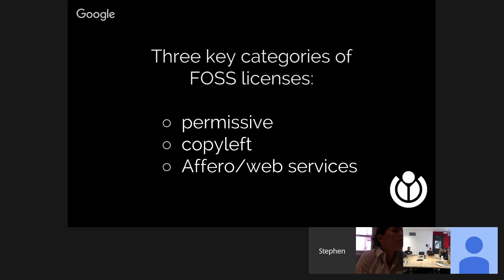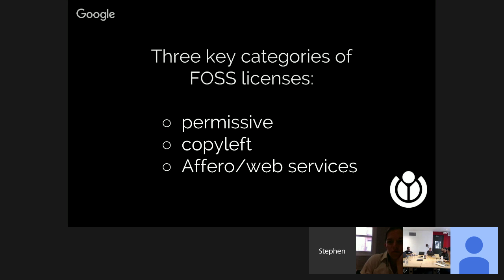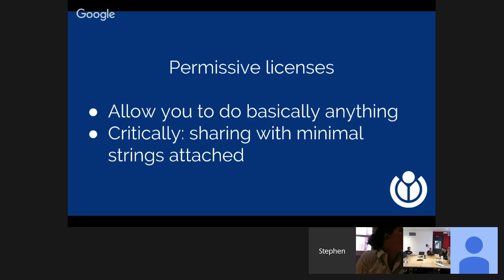The three categories we'll discuss today are: permissive licenses, copyleft licenses, and the Afero category. All open source licenses allow you to use, modify, and share, but they have different obligations exactly when you use or share the software. Permissive licenses are designed for simplicity — basically you want to get your software out there. Copyleft licenses are designed to promote freedom and ensure that things stay free and open source. And the Afero category consists essentially of one license, designed to promote freedom especially in a world that has web services.